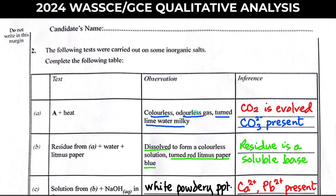You will use the test and the observations to deduce the inference. The first one says: A + heat, observation — colorless odorless gas turned limewater milky. Which gas turns limewater milky? There are two: carbon dioxide (CO₂) and sulfur dioxide (SO₂). Those are the two gases that turn limewater milky.